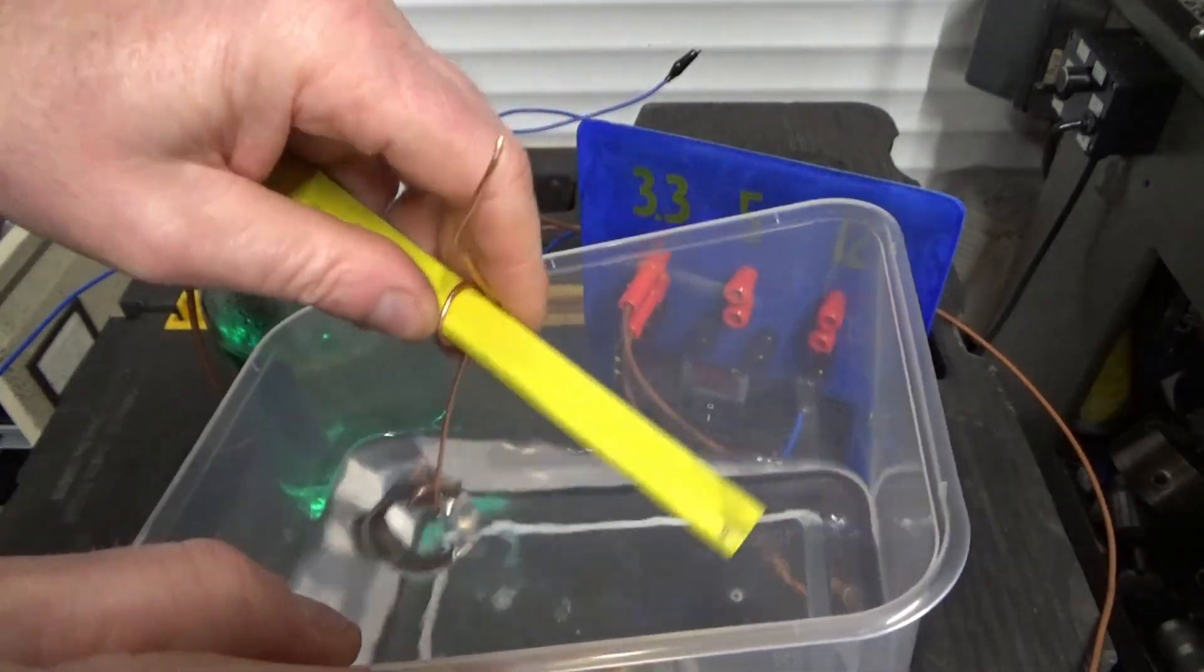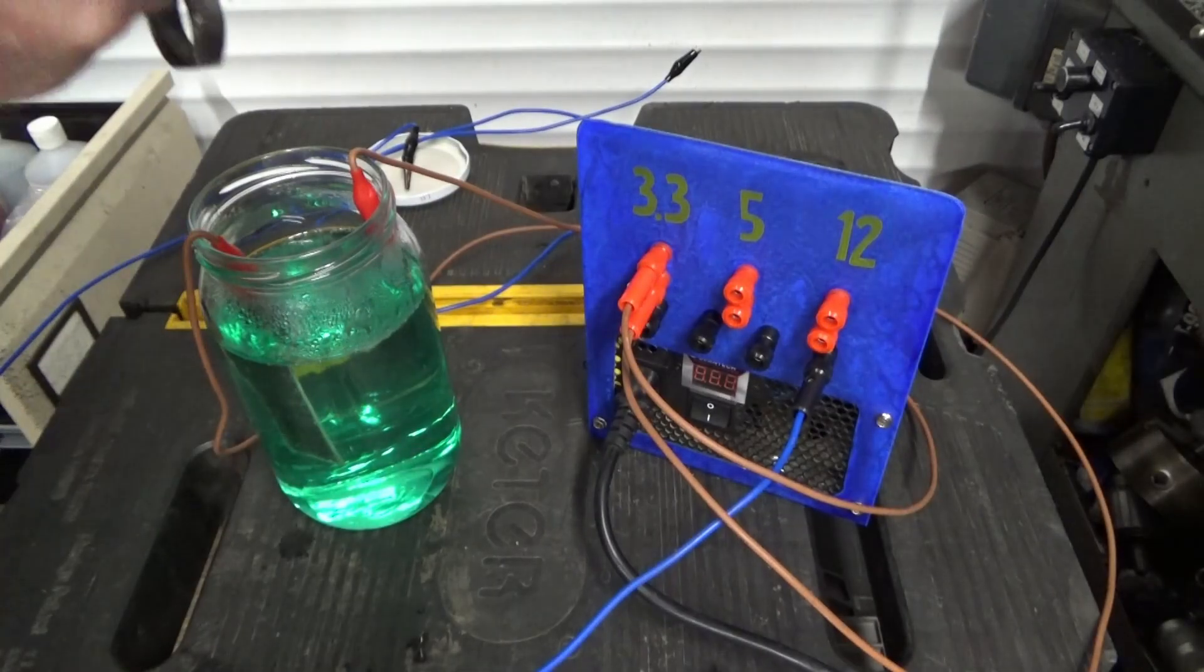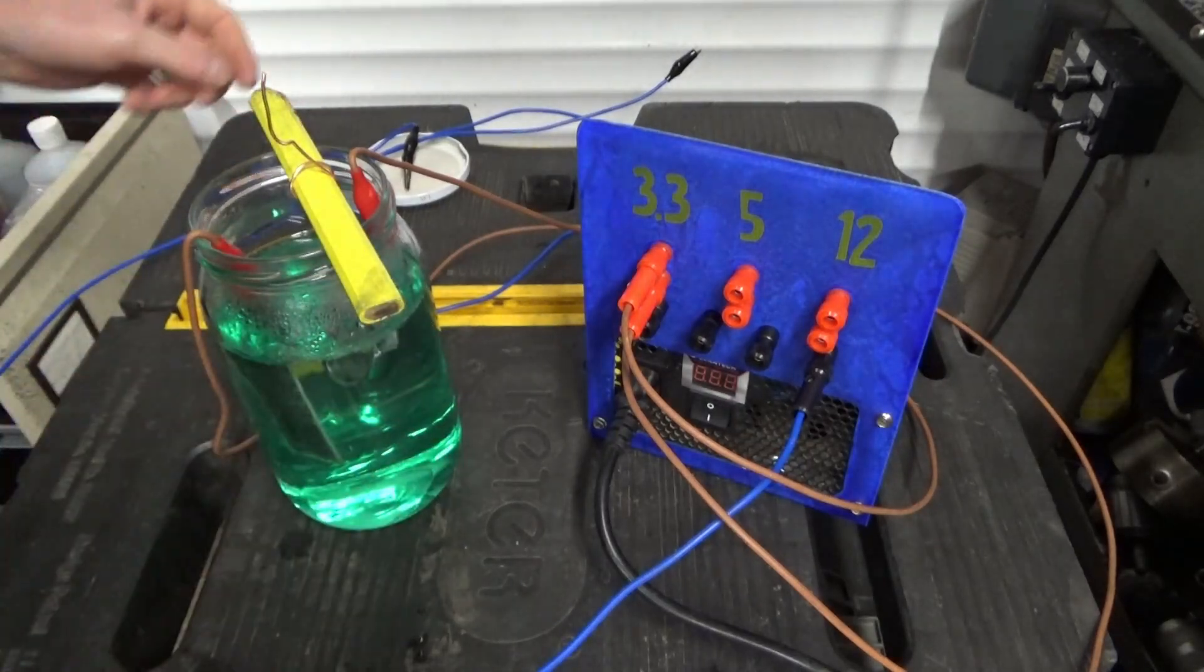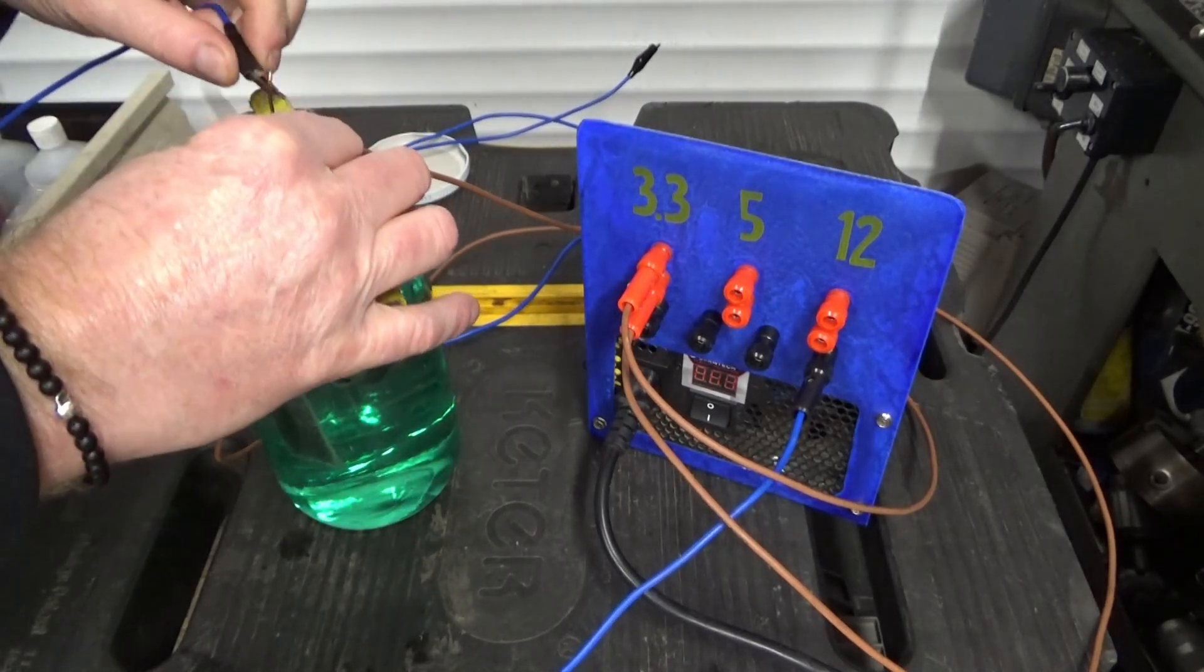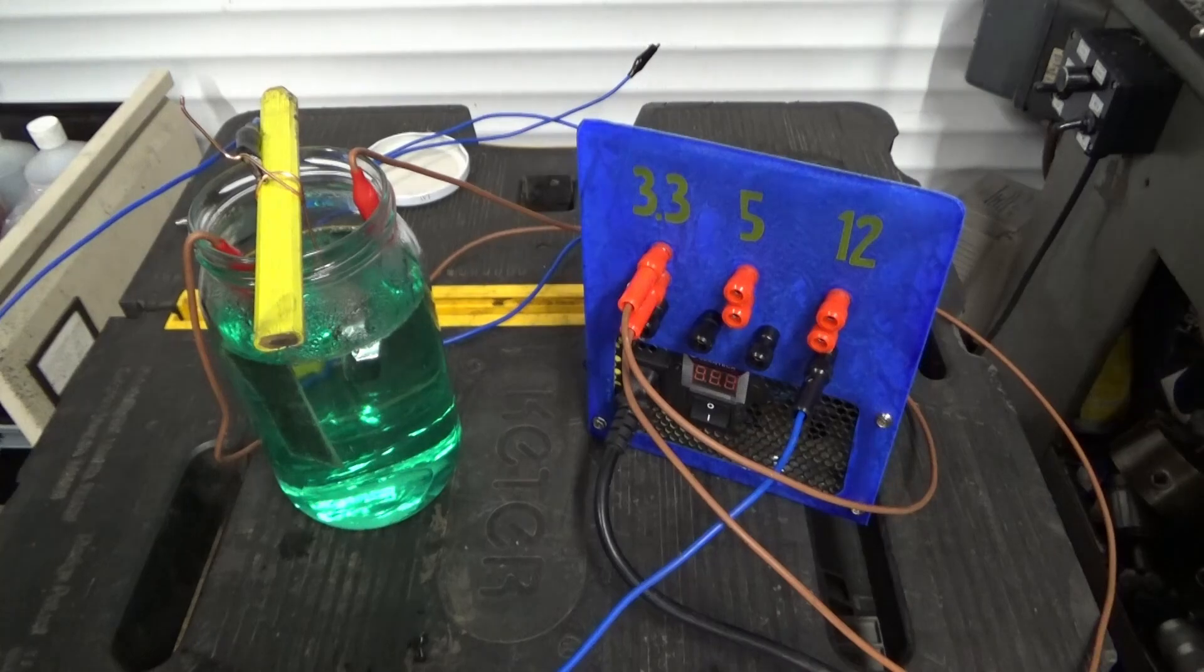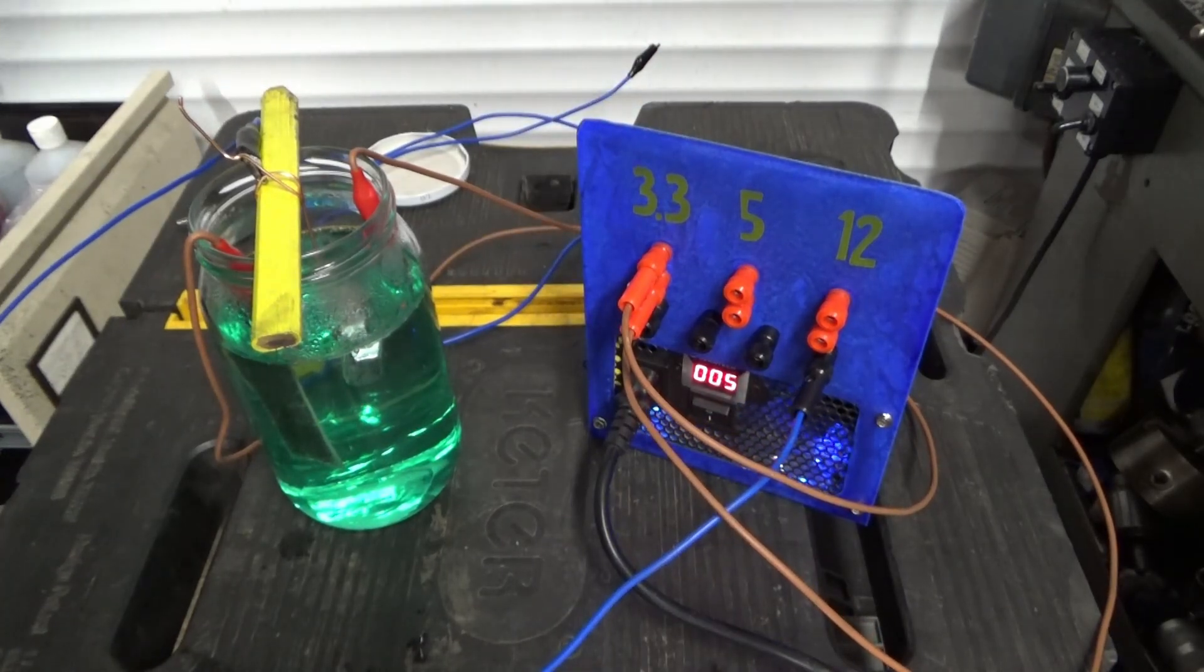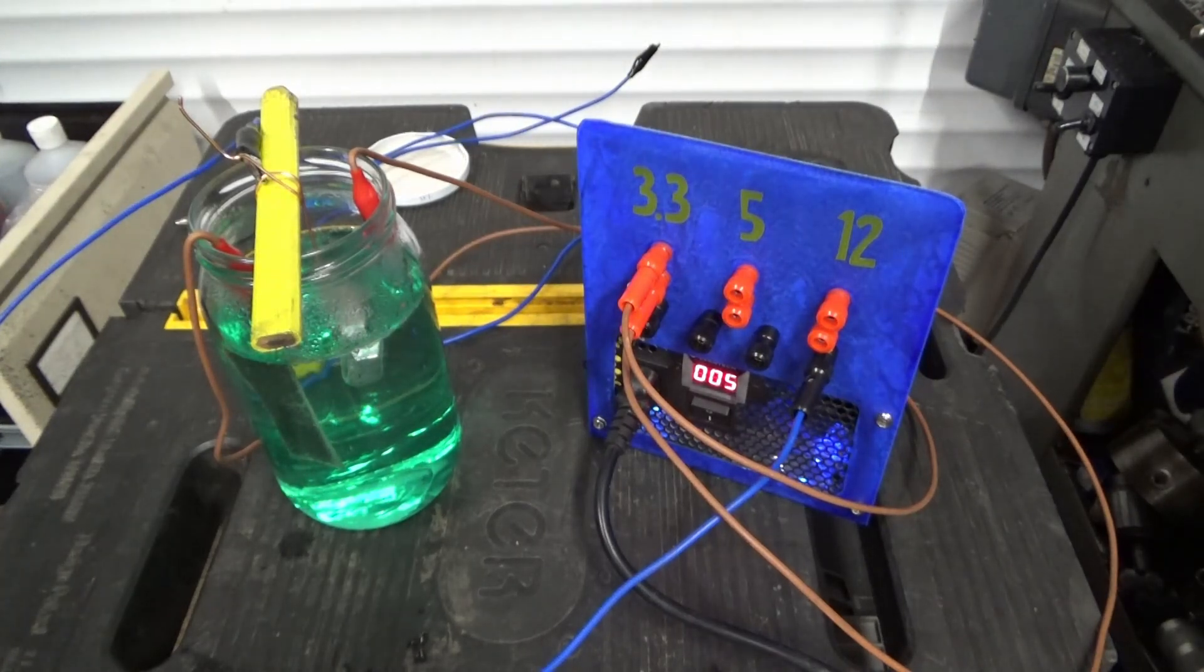I'm going to rinse it off in a bit of acetone just to get rid of any polishing wax and stuff and any grease and grime that's on there. That's that in the middle. Yep, we're about there. Right, got it on the 3.3 volt setting. Let's turn it on. We've got bubbles, little teeny tiny bubbles. Right, I'm going to give that probably half an hour or so. We'll see how we get on with that.